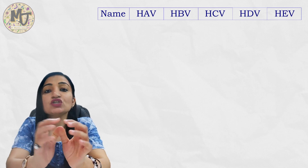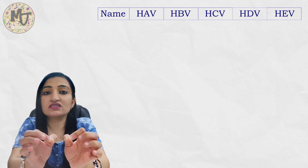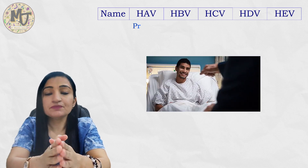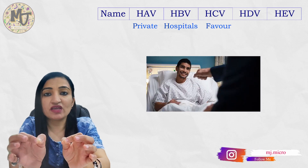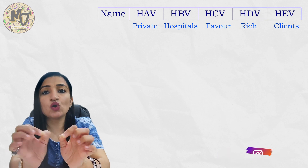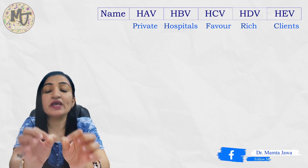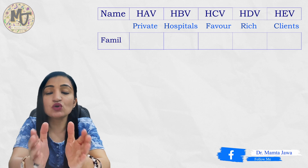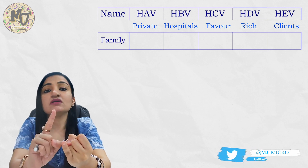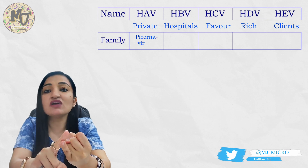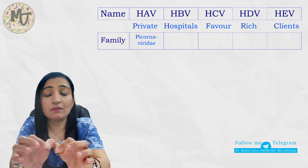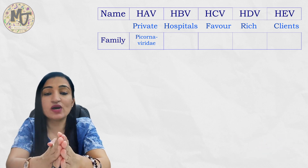First and foremost, you need to remember the families to which these viruses belong. To remember that, from left to right, use the mnemonic: 'Private Hospitals Favor Rich Clients.' The very first letter of every word in this sentence is going to help you recall the names of the families of these viruses. P of 'Private' stands for Picornaviridae family.